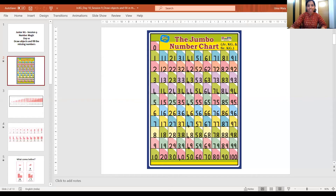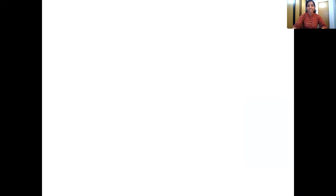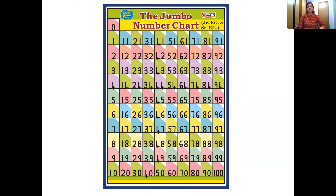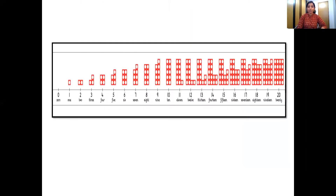And what's going to come now? Here comes our number chart, where we can see that all the numbers follow a sequence. They come one after the other. And what's this, children? Do you remember? That's right. This is a big number line, and it is the first number on the big number line. That's zero.